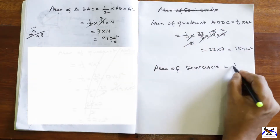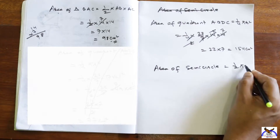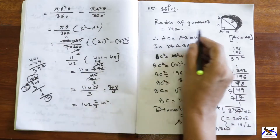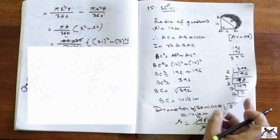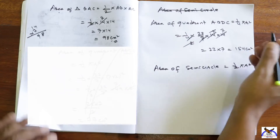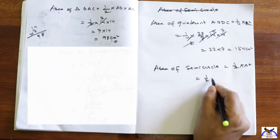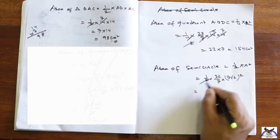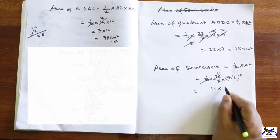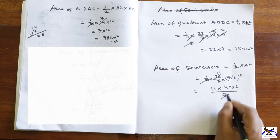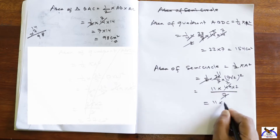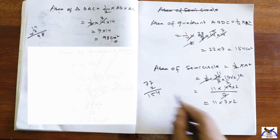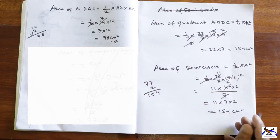Area of semicircle equals (1/2) pi r² equals (1/2) into (22/7) into (7 root 2)². Simplifying: (1/2) into (22/7) into 98 equals 11 into 7 into 2 equals 154 cm².